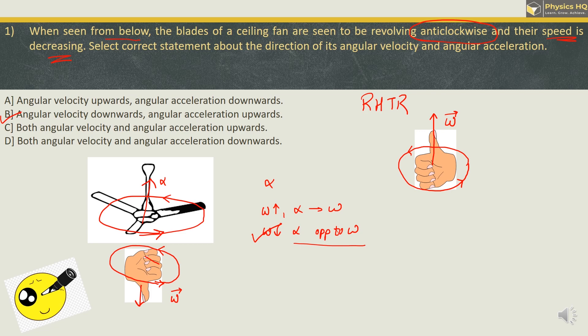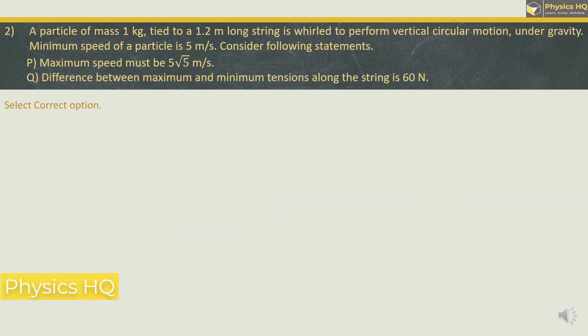Let us check out the next MCQ. A particle of mass 1 kg tied to a 1.2 meter long string is whirled to perform vertical circular motion under gravity. Minimum speed of the particle is 5 meter per second. Consider the following statements: P — maximum speed must be 5 root 5; Q — difference between maximum and minimum tensions along the string is 60 Newton. Select the correct option.